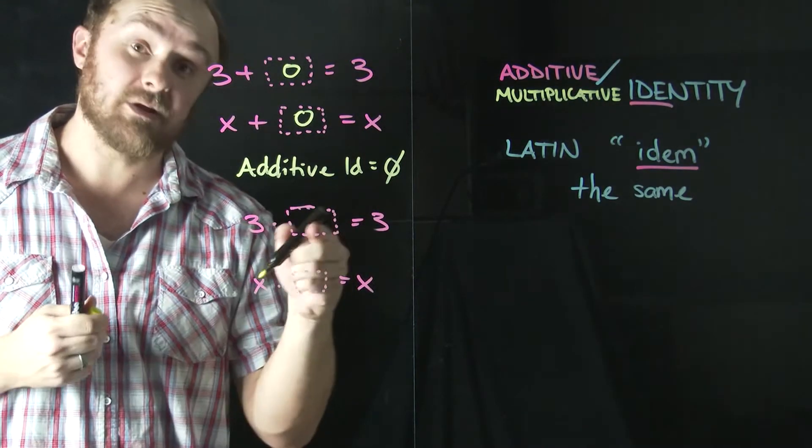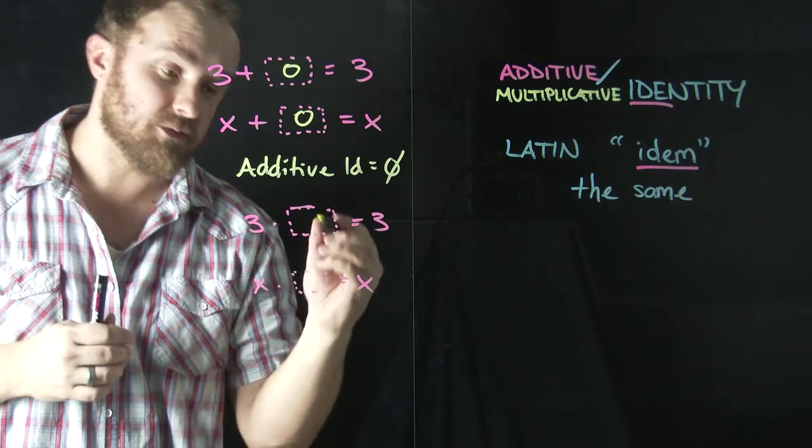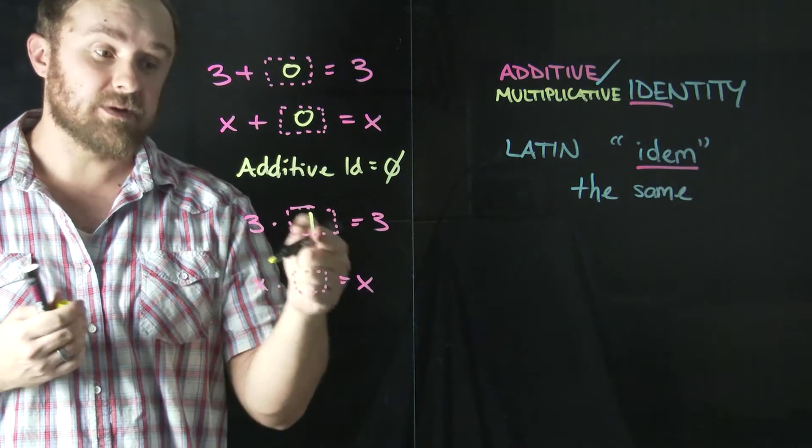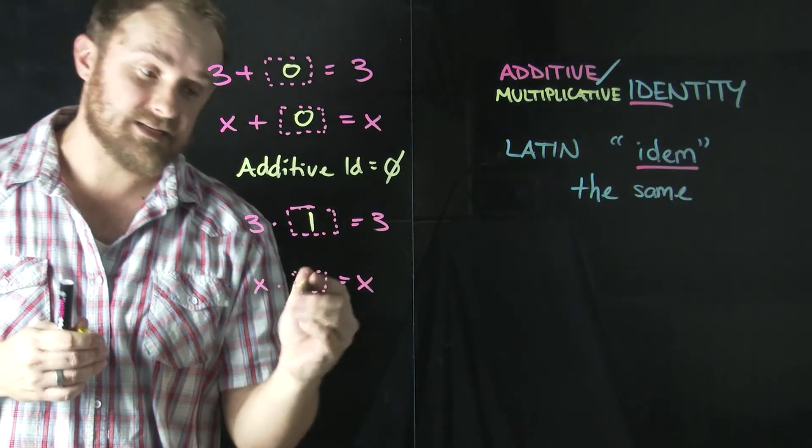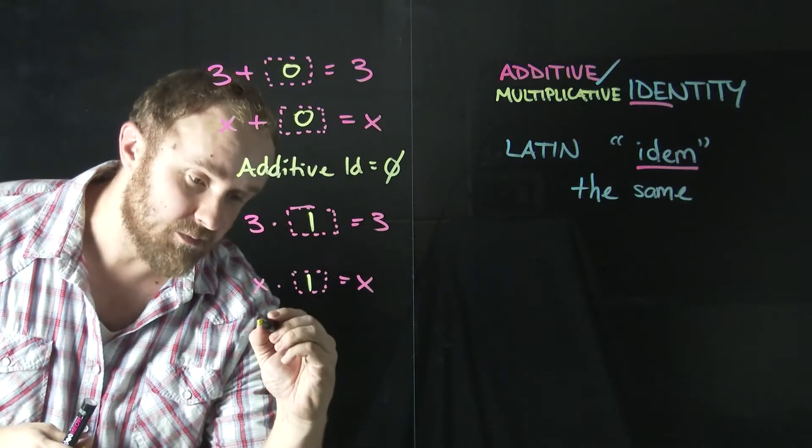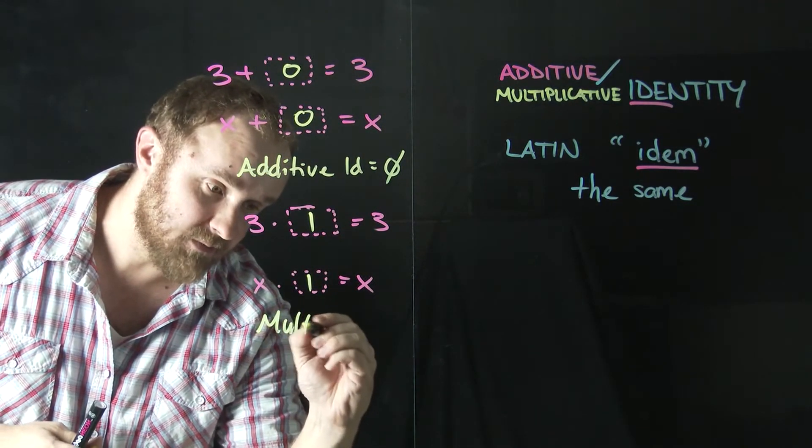Well, this isn't zero because again, that would make this equal to zero, not 3. The only thing I can put in that box is one. 3 times 1 is 3. And again, x times 1 is x. So the multiplicative identity would be one.